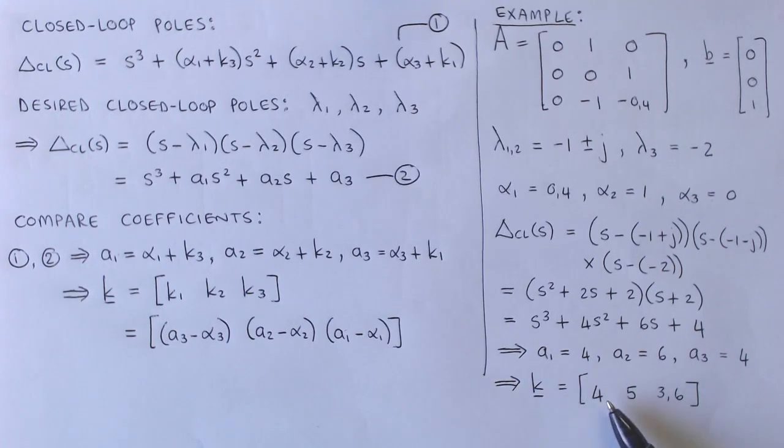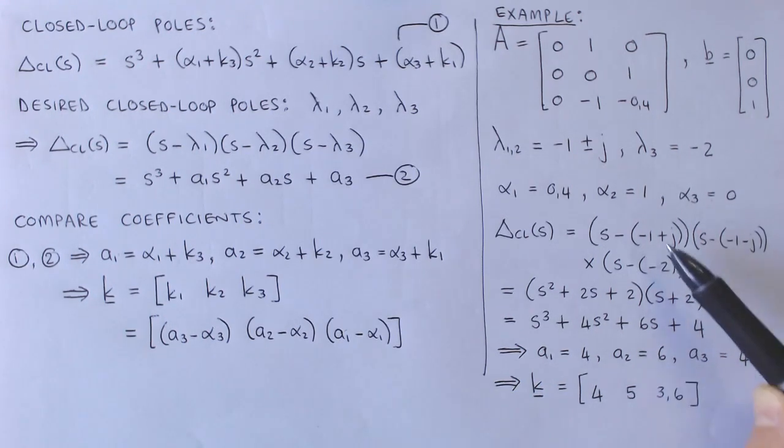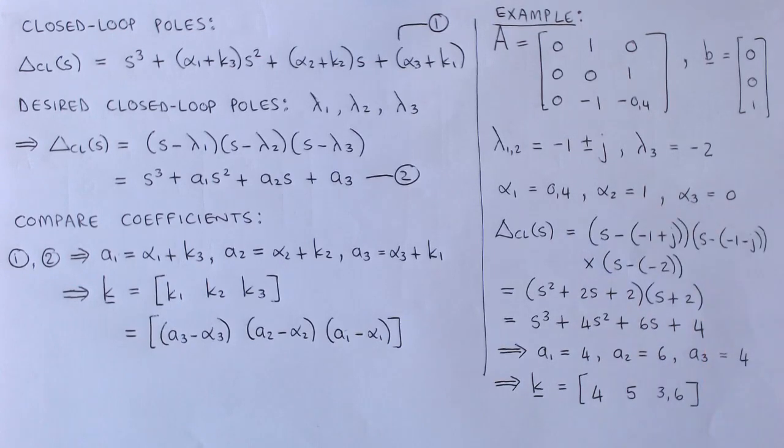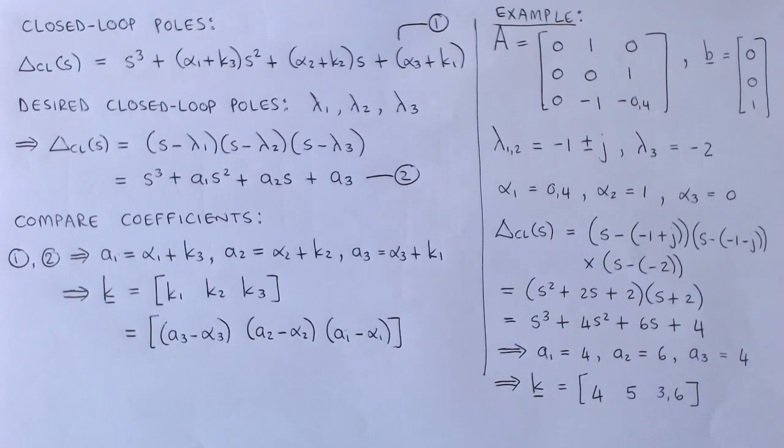We can then simply write down the state feedback gain vector K, where the first element is A3 minus alpha 3, the second element is A2 minus alpha 2, and the third element is A1 minus alpha 1. It is therefore very easy to design a regulator when the plant is described in control-canonical form.